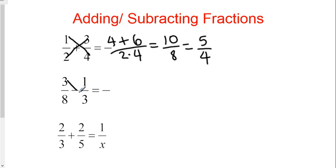Just like before, you multiply across. 3 times 3, so 3 times 3 is 9. 8 times 1 is 8. Now this time, since you're subtracting, you're going to subtract there. Over 8 times 3 is 24. And you end up with 9 minus 8 is 1/24.